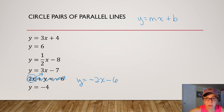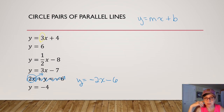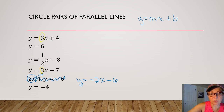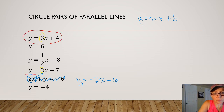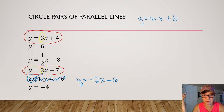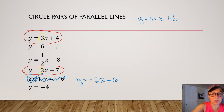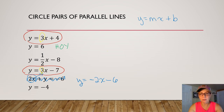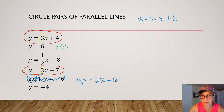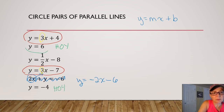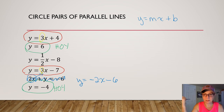The slope of the first equation is three. Looking for another equation with a coefficient on x of three — here it is. So we circle the first equation and the fourth equation in red because they are a pair of parallel lines. Now the second equation is a horizontal line — when you only have a y, it's horizontal. The only kind of line parallel to a horizontal line is another horizontal line, so we're looking for another equation with only a y. We can see that right here at the bottom: y equals six and y equals negative four are parallel lines as well.